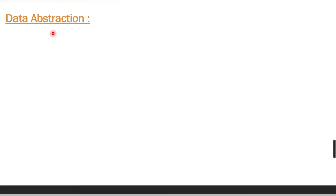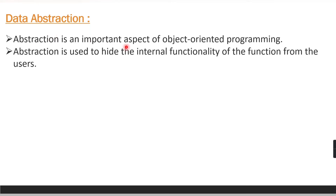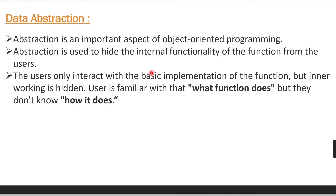Hello friends, welcome to CodeCrush Coding. In this video we will cover data abstraction in Python. Abstraction is an important aspect of object-oriented programming. It is used to hide the internal functionality of a function from the users. The users only interact with the basic implementation of the function, but the inner working is hidden — the user knows what the function does, but not how it does it.